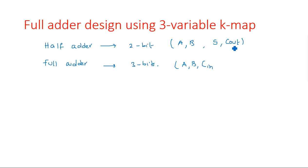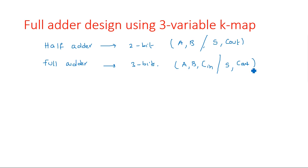Sum and Carry Out are the outputs of the half adder. For the full adder, as I said, we have three inputs: A, B, and the previous carry input Cin. The outputs are the same — Sum and Carry Out. Now let's look at the block diagram of the full adder.